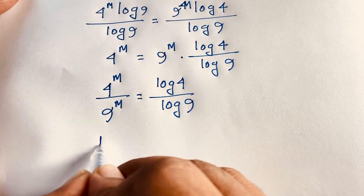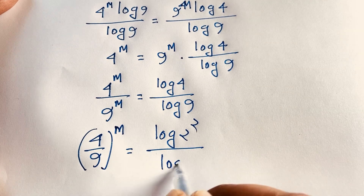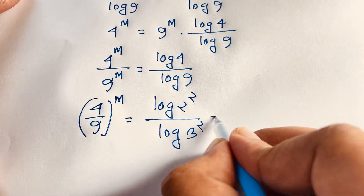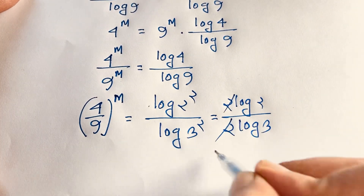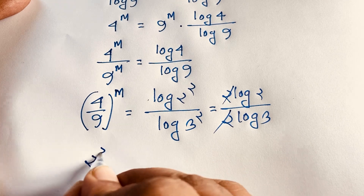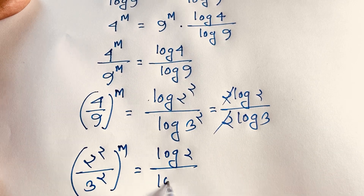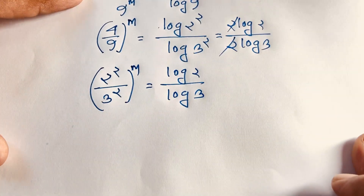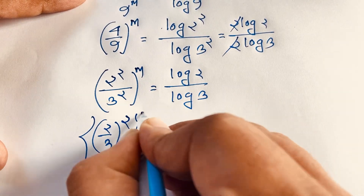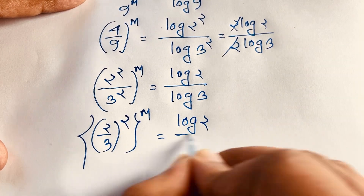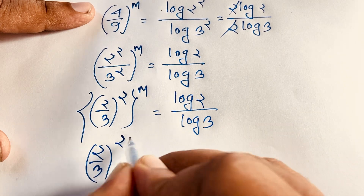By the exponential law, the left side becomes (4/9) to the power m. Now log 4 is log of 2 squared, which is 2 log 2, and log 9 is log of 3 squared, which is 2 log 3. The 2's cancel, giving log 2 over log 3. So (2/3) to the power 2, whole to the power m, equals log 2 over log 3.